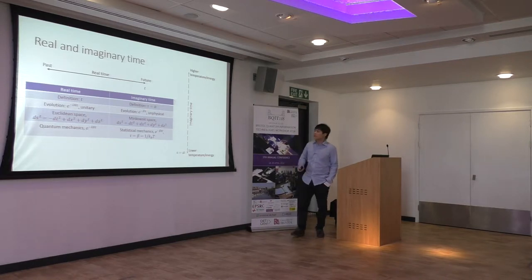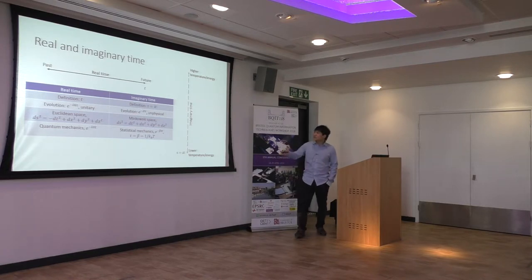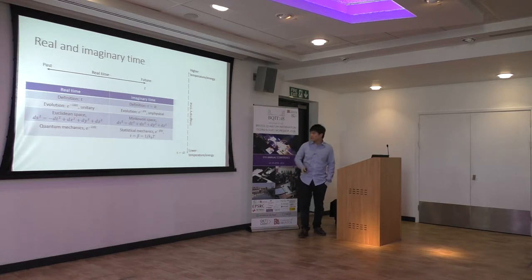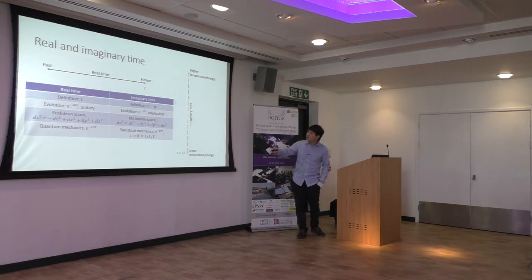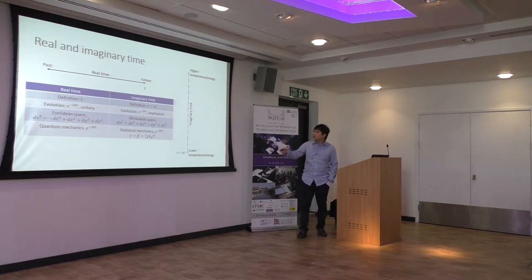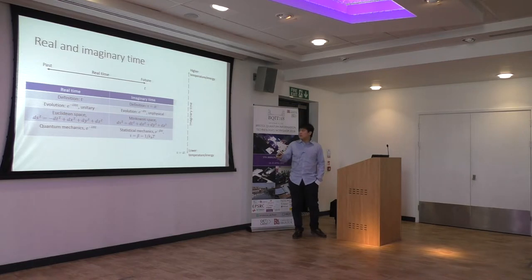Imaginary time is something unphysical. For evolution we can have an imaginary time evolution given by e to the minus H tau — of course this is not a unitary operation, it is just some mathematical matrix. In relativity we have Minkowski space. For real time we have a propagator, while for imaginary time we have a corresponding statistical mechanics quantity such as a Gibbs state. Overall, imaginary time is a powerful mathematical tool in physics.